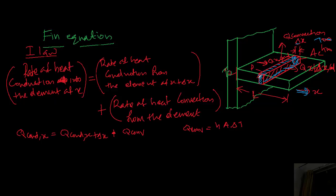The perimeter is 2 times this side plus 2 times this side, and the blue-marked area is through which convection takes place. By the first law, the rate of heat conducted at X into this element is equal to the heat transfer by conduction at X plus dX, plus whatever heat is transferred through convection.